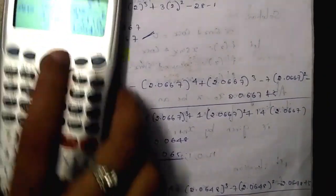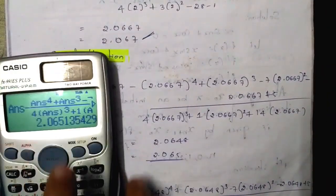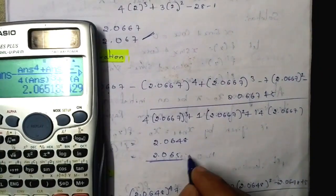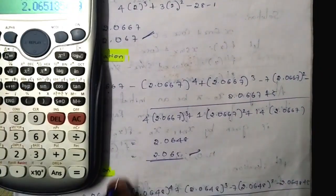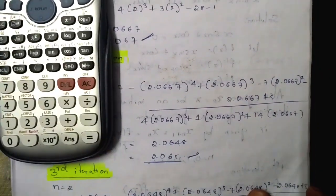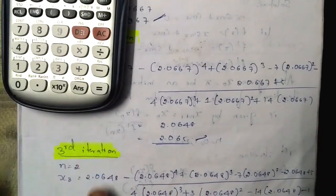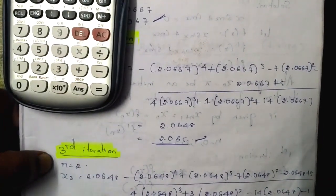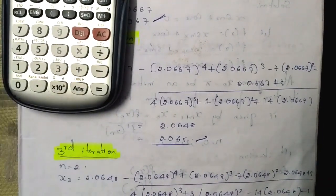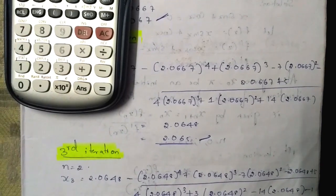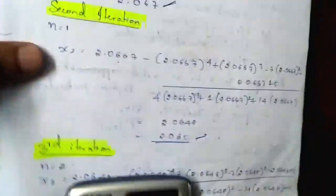The second iteration gives the answer 2.065. This is the x₂ value, so we will move on to the third iteration where n equals 2.